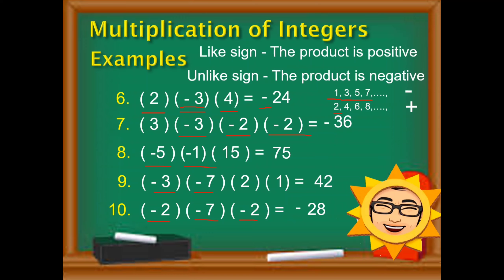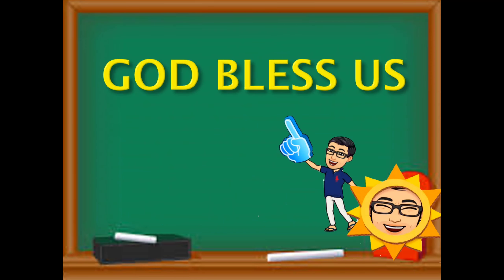So I hope you are guided with our rule. Kapag dalawa ang given, just concentrate if it is like sign or unlike sign. Kapag 3 or more yung given, applicable pa rin — pero pwede nating idagdag yung shortcut: odd number ng negative integers na given gives a negative answer, and even number ng negative integers na given gives a positive answer. Okay, Kamato class — that's all with this presentation. Thank you. God bless us.